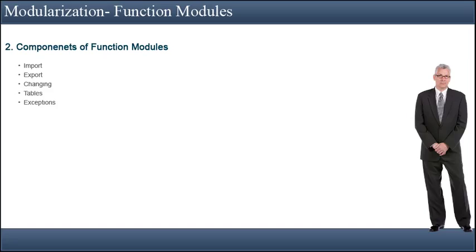Import: these are input parameters of a function module. Export: these are output parameters of a function module. Changing: these are parameters which act as both importing and exporting parameters. Tables: these are internal tables which also act as importing and exporting parameters. Exceptions: these are used to catch certain types of errors in function modules.